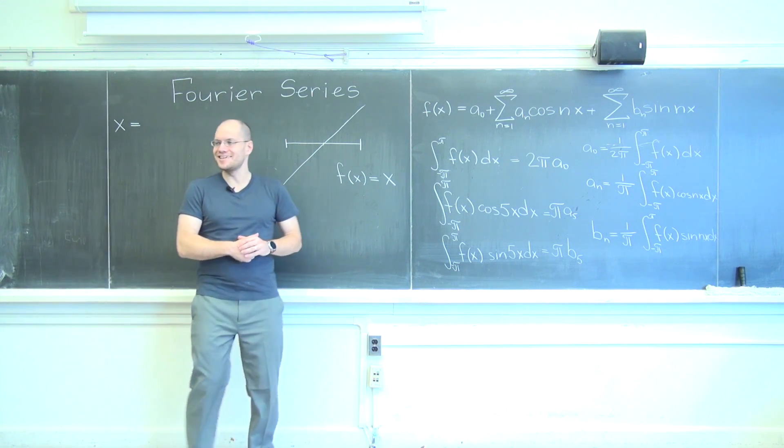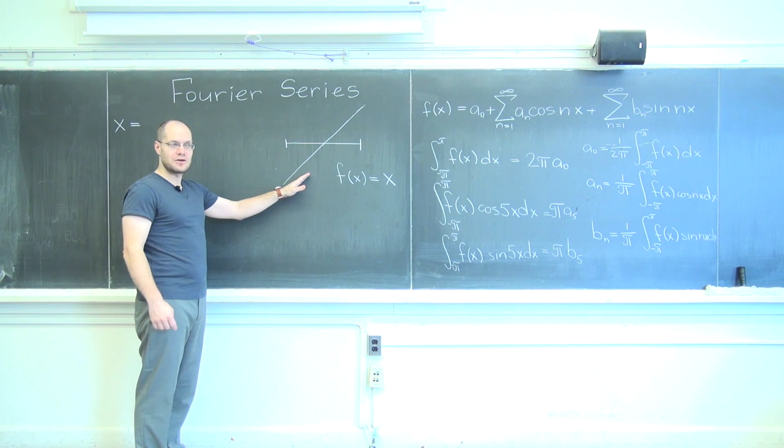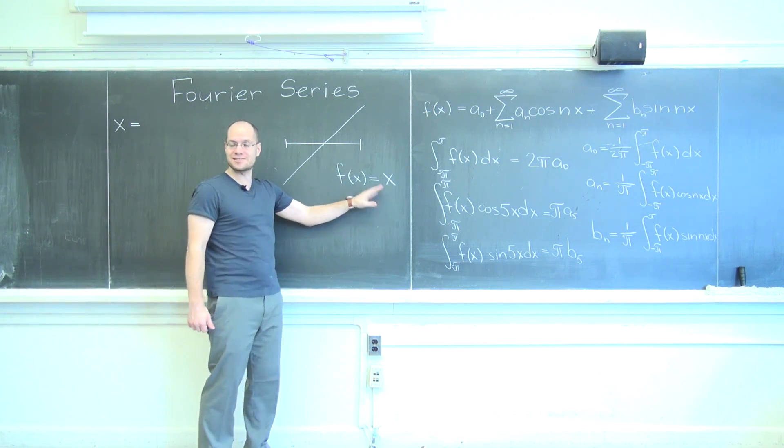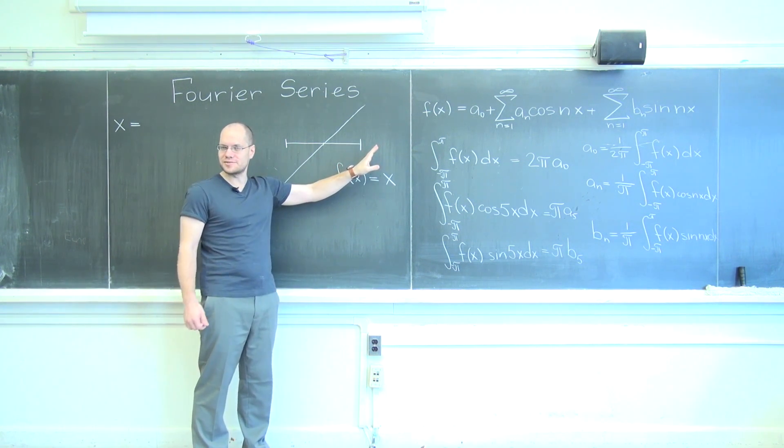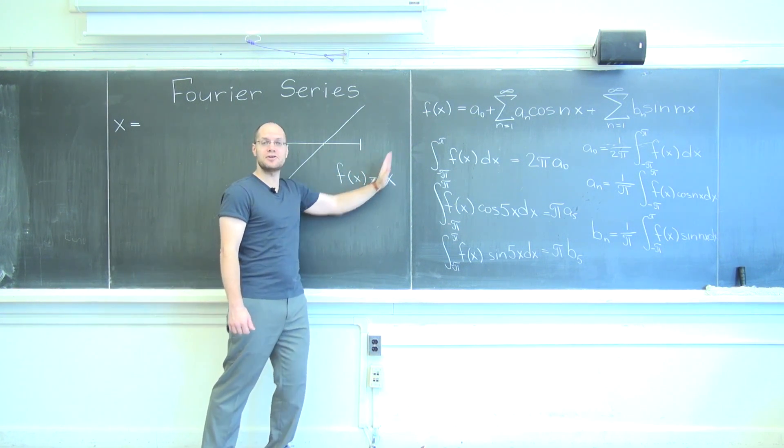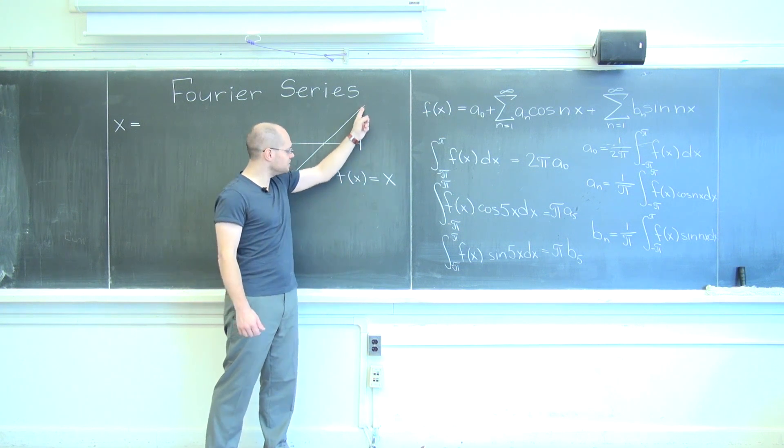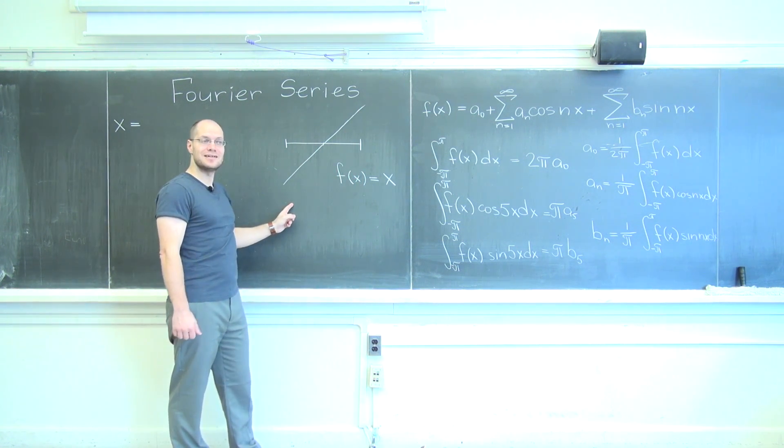All right, let's discover the Fourier series for this function which is f of x equals x, which is actually discontinuous because we're decomposing its periodic repetition which experiences discontinuity here and here.